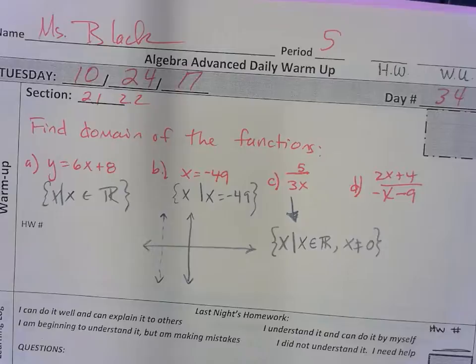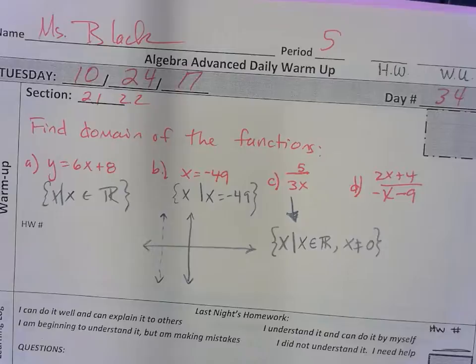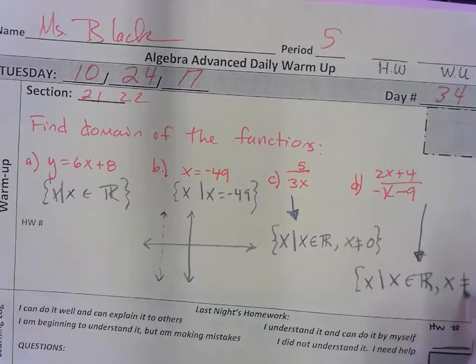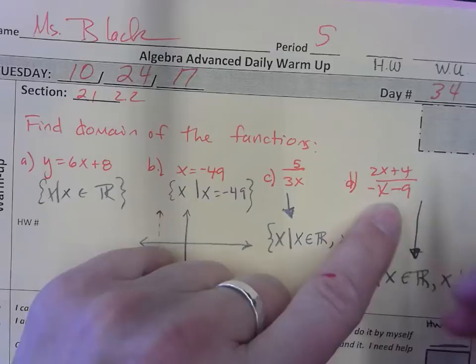Who wants to do the fourth one? Reese? I got X such that X is a real number, and X is not equal to negative 9. X such that X is an element of the reals, but X cannot be equal to what? Negative 9. Negative 9. Do you guys agree? Yeah. Yes.